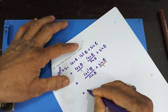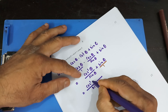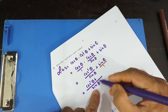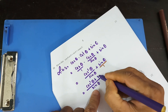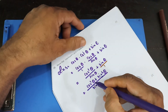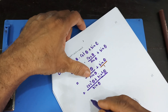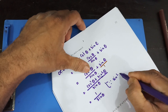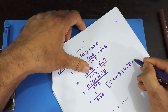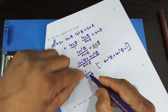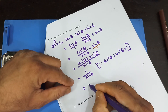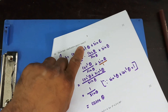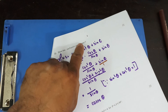Taking sin θ as the LCM, we get (cos²θ + sin²θ) / sin θ. Since sin²θ + cos²θ = 1, this simplifies to 1 / sin θ. And 1 / sin θ is cosec θ, which equals the right hand side. So that's shown.